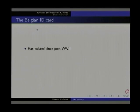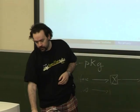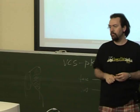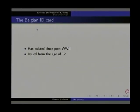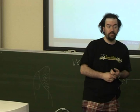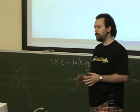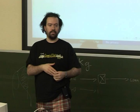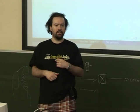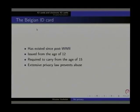We've had ID cards since during the war. The Germans gave us ID cards and we just didn't throw them away — we kept them. Of course they weren't electronic all the time, but it's been done in Belgium for quite some time. Everyone starting from the age of 12 has an ID card in Belgium, but they're not required to have them at all times until the age of 15. There is extensive privacy law in Belgium that prevents some abuse, such as the fact that only the police is allowed to require me to hand over my ID card. Everybody else can ask, but I can tell them to screw themselves. So that prevents some abuse and makes sure that my privacy isn't entirely compromised by the fact that I have an ID card.